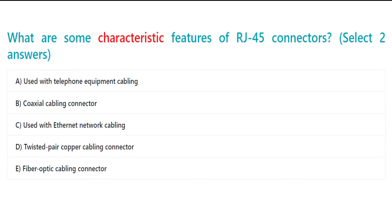What are some characteristic features of RJ45 connectors? Select two answers. A. Used with telephone equipment cabling. B. Coaxial cabling connector. C. Used with Ethernet network cabling. D. Twisted pair copper cabling connector. E. Fiber optic cabling connector.